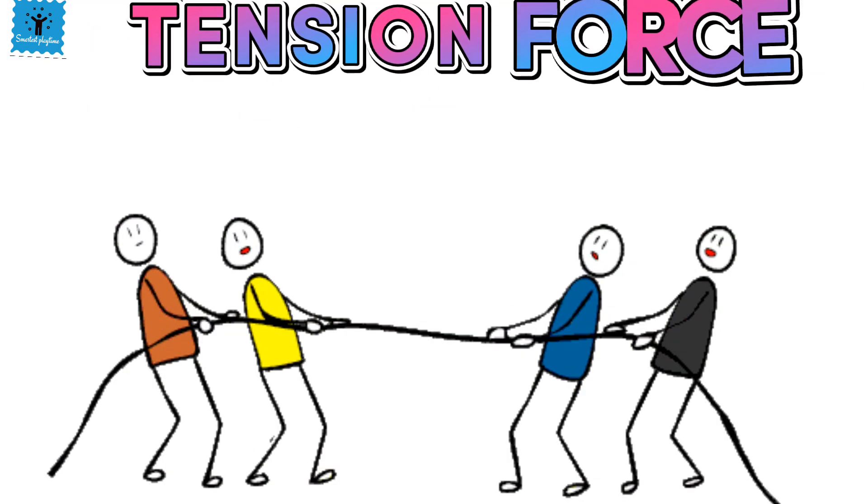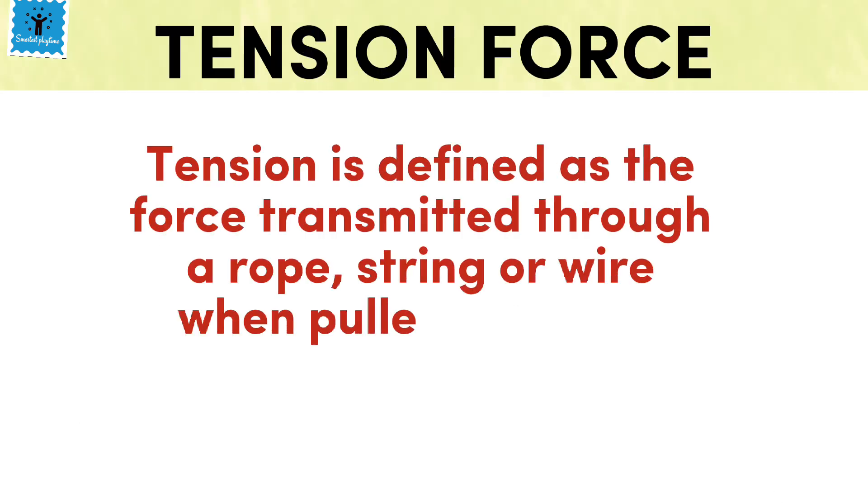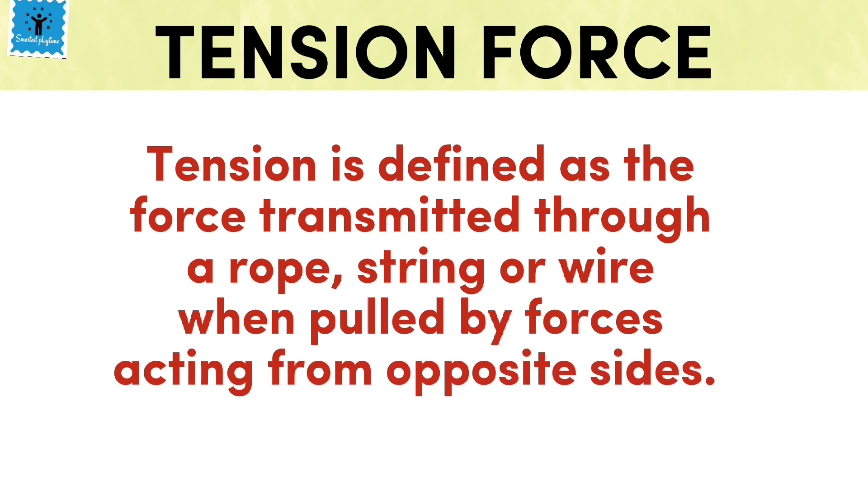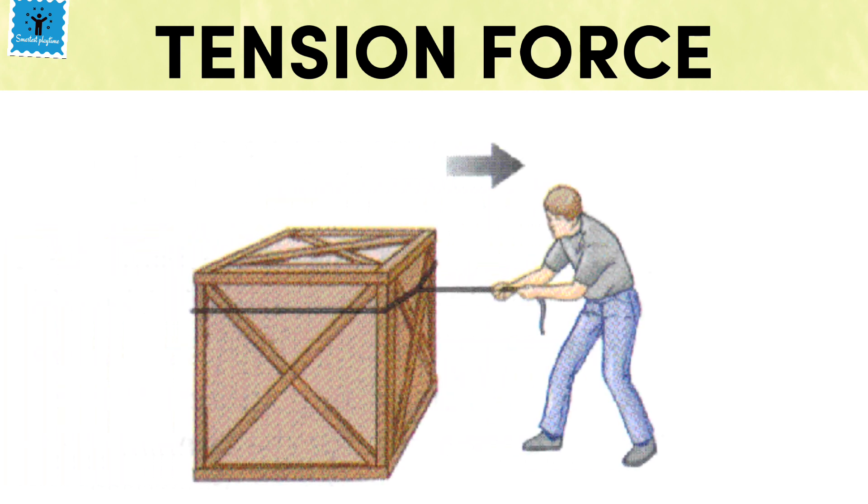The third category is tension force. It is the force transmitted through a rope, string, cable, or wire when it is pulled by two objects on its opposite ends. Imagine you are pulling a box with the use of a rope. The box is tied on one end of the rope and you are pulling the rope through the other. You are exerting force on the rope, and then the rope pulls the box. The force applied on the box by the rope is the tension force. In this case, you are able to move the box without direct contact with it. The force went through another medium, which in this case is the rope.